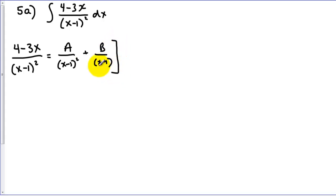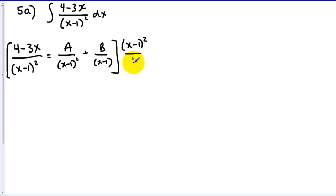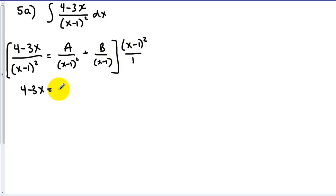After that setup, the procedure is going to be similar to what we did before — we'll multiply by our common denominator. Here those cancel out. Here both cancel out, so we just have A. And here one of the x minus 1's cancels out.